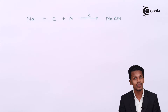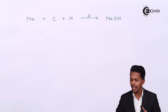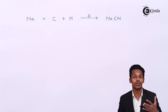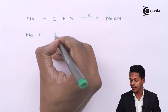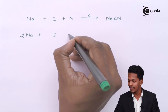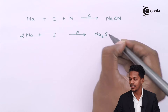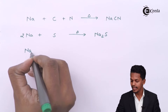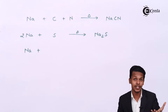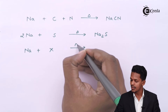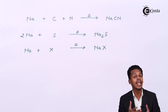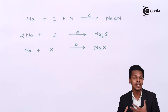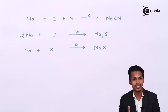Sodium cyanide is further used to confirm whether nitrogen is present in the organic compound. Similarly, if the organic compound contains sulfur, two moles of sodium react with sulfur to produce sodium sulfide (Na₂S). And if sodium reacts with a halogen such as bromine, chlorine, or iodine present in the organic compound, it forms sodium halide. These three ionic products — NaCN, Na₂S, and sodium halide — confirm the presence of nitrogen, sulfur, and halogen respectively.